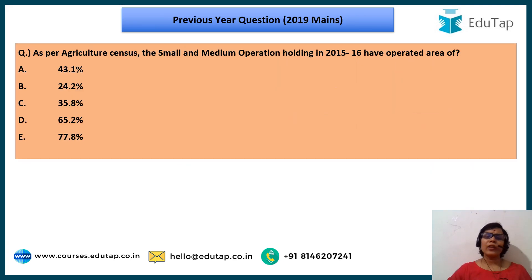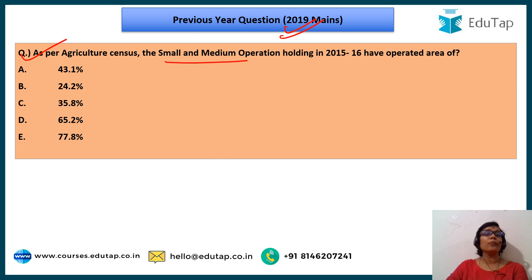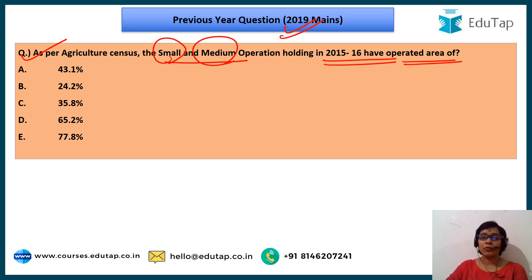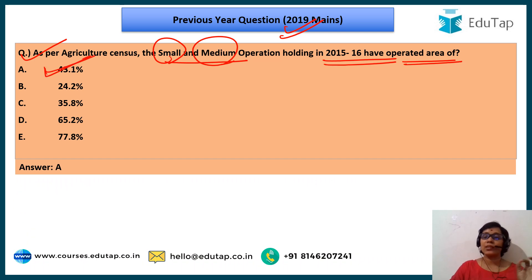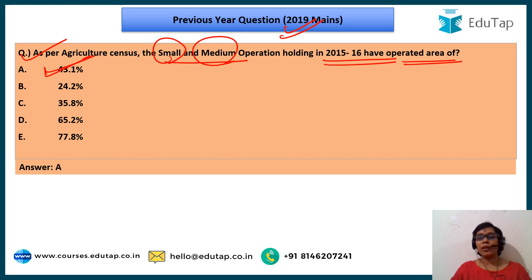A previous year question from 2019 asked: as per the agriculture census, the small plus medium operational holding operated area in 2015-16 amounts to what percentage? Adding the respective figures gives 43.1%, which is the correct answer. Questions based on size area groups — covering marginal, small, and medium farmers — are also an important topic pertaining to Agriculture Census 2015-16.